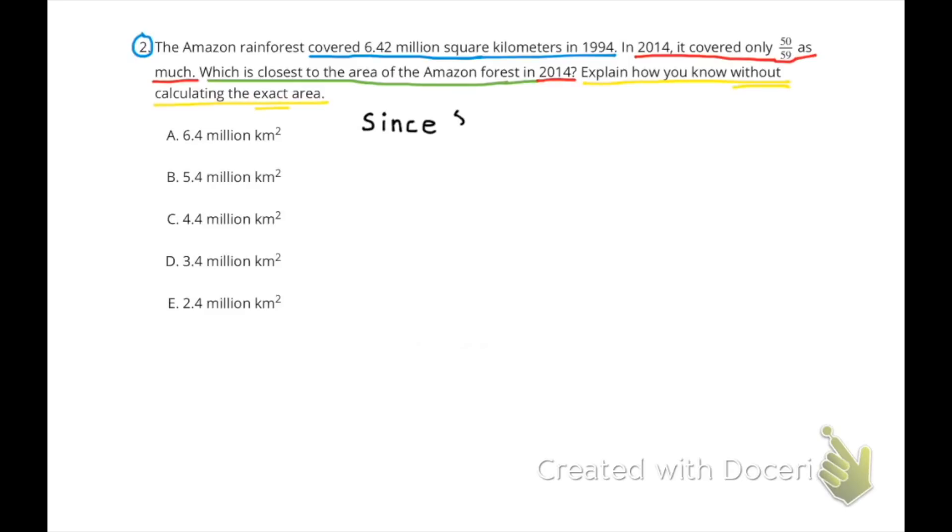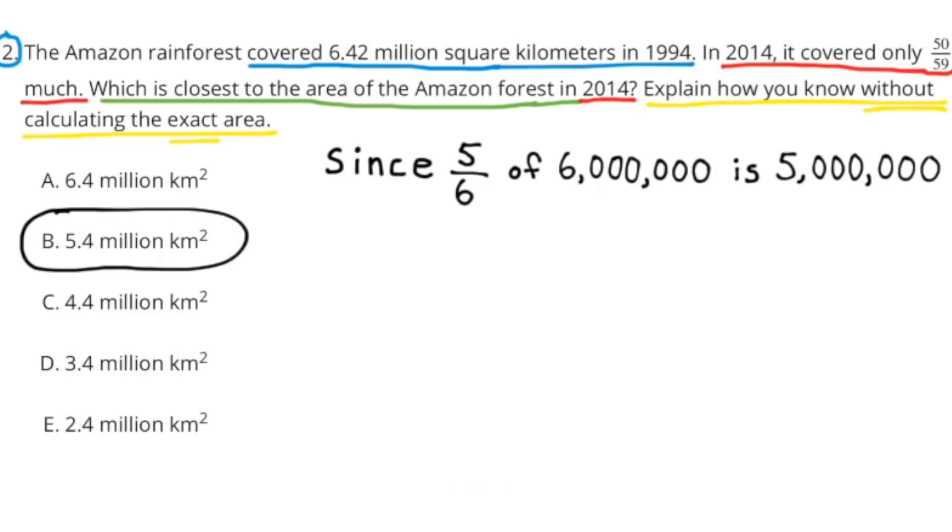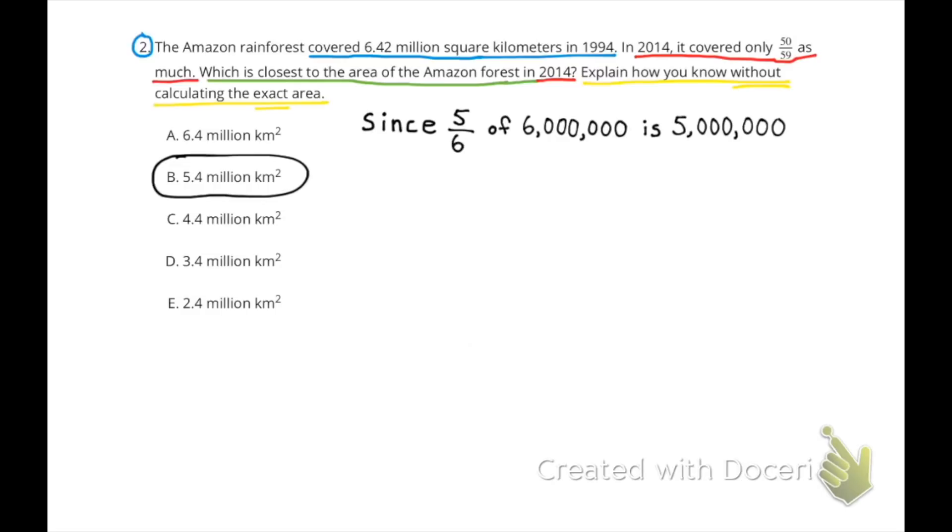Since 5/6 of 6 million is 5 million, I chose B, 5.4 million kilometers squared.